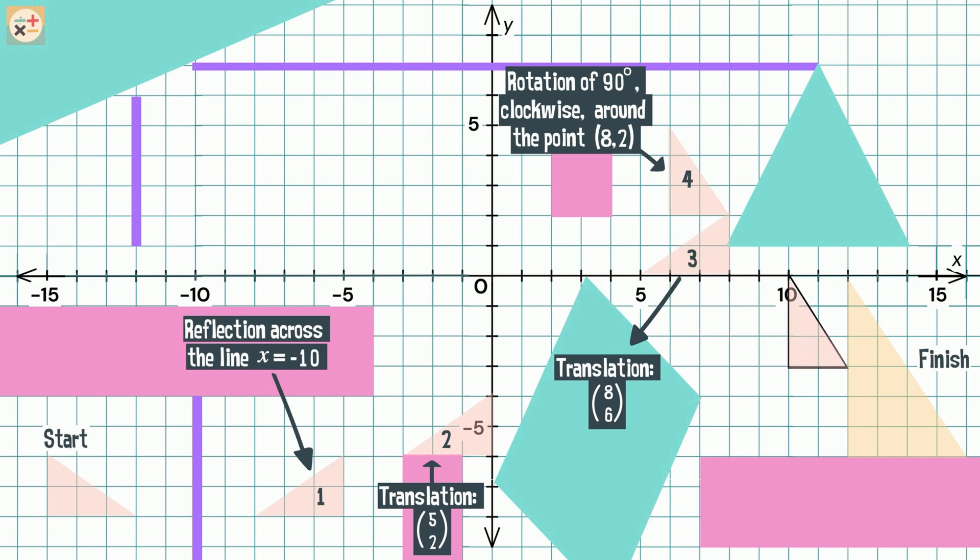The fifth move uses translation again, moving four spaces to the right, and five spaces downwards.